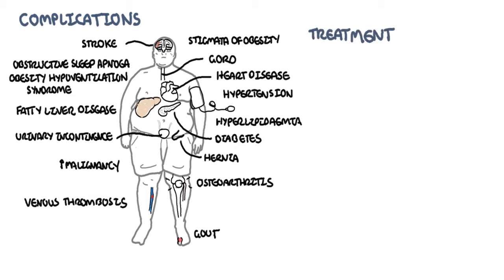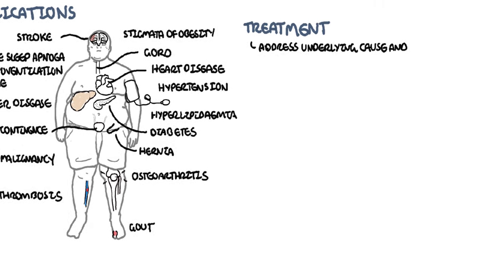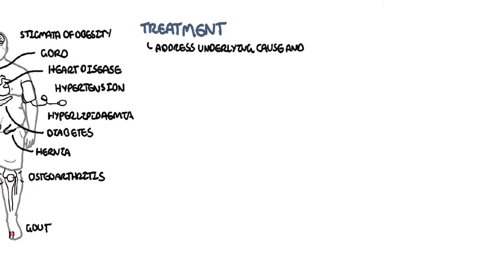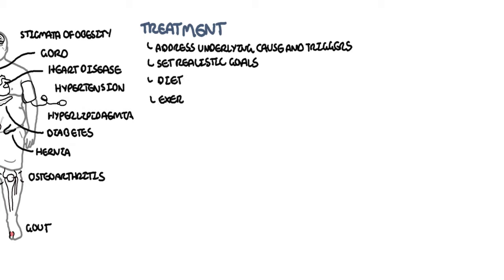The treatments for obesity involve many approaches. First is to address the underlying cause, whether medical or behavioral, as well as addressing the triggers. You want to set a realistic goal — for example, a 5% body weight reduction per year — and create an action plan involving a low calorie diet and an exercise program.